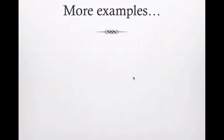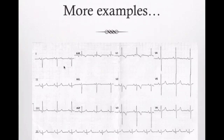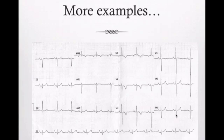Looking at another EKG: down-up-up again, criteria for right axis deviation. V1 is pointing up - thinking right bundle or right ventricular hypertrophy. There's a really tall R wave greater than 7 millimeters, tall S waves in V5 greater than 7 millimeters, and T wave inversion - this is a strain pattern. This is right ventricular hypertrophy with strain. Looking at lead two, there's a very big upward P wave greater than 2.5 millimeters - that's right atrial hypertrophy. So this patient's entire right heart is hypertrophic: right atrial hypertrophy and right ventricular hypertrophy on the EKG.